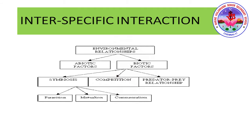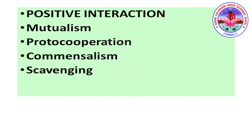Now we study interspecific interactions. Environmental relationships are based on two components: biotic factors and abiotic factors. Biotic factors show interspecific interactions like symbiosis, competition, and predator-prey relationships. On the basis of symbiosis, it is divided into three types: parasitism, mutualism, and commensalism.